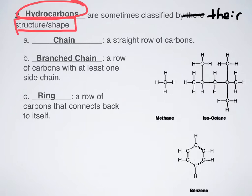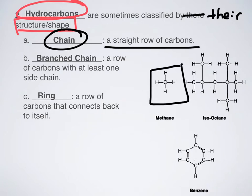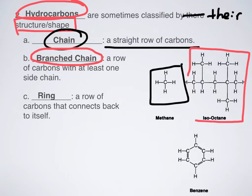The first is called a chain — it is just a straight row of carbons. Next up, we have branched chains: that's a row of carbons with at least one side chain. Right here is an example of a branched chain. This would be like our starting chain, and then these little guys are branches branching off from them. They kind of look like trees, and that's where we get the term branch from.